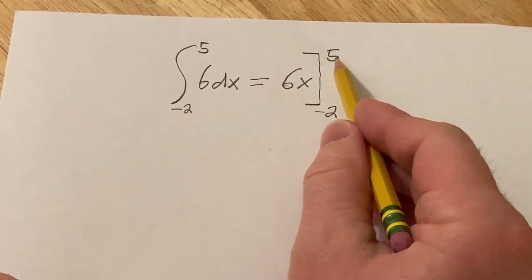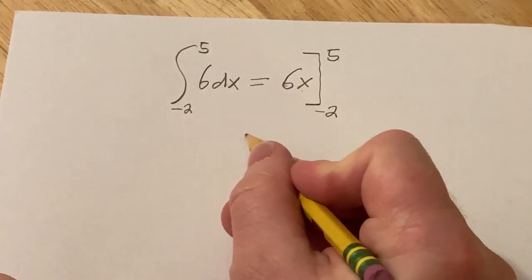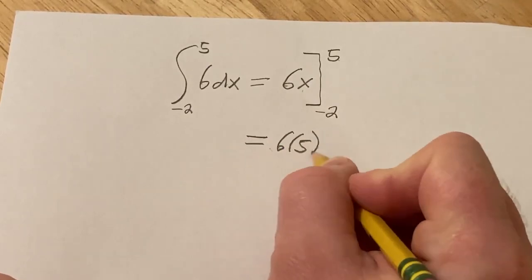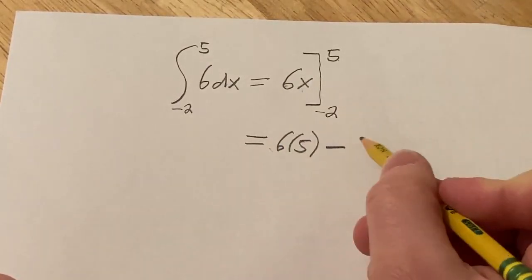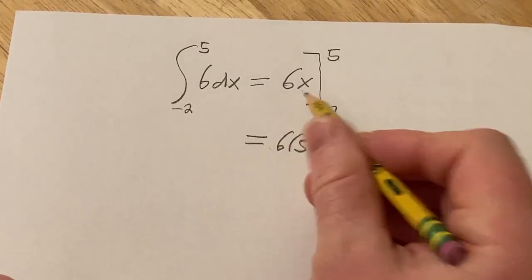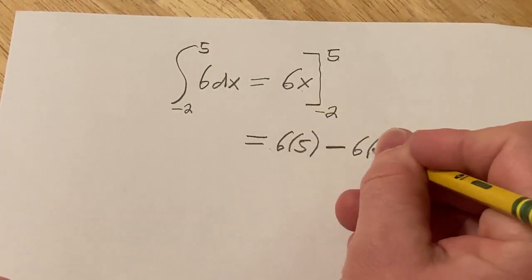Then you plug in the top number first. So this is equal to 6 times 5. Then you subtract. That's part of the formula. And then it's 6 times and then you plug in the bottom number. So negative 2.